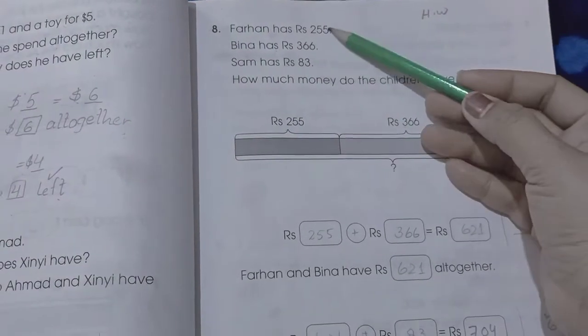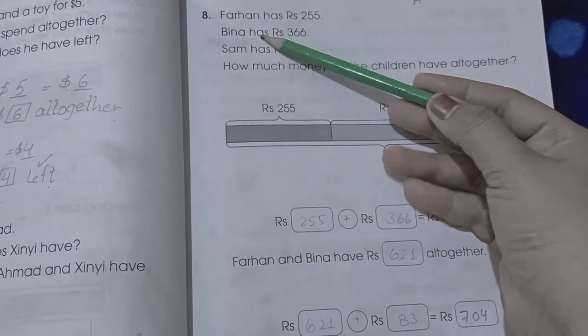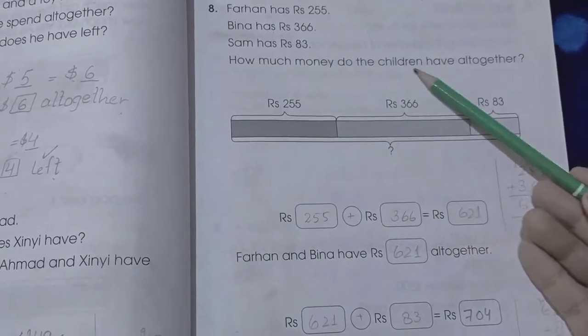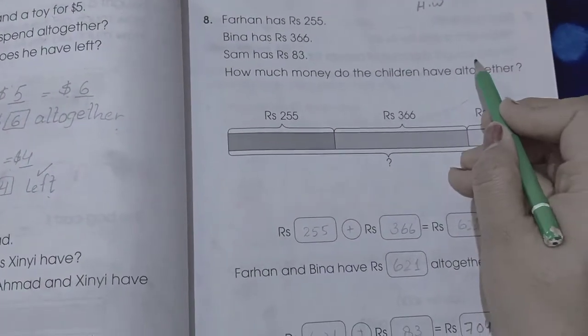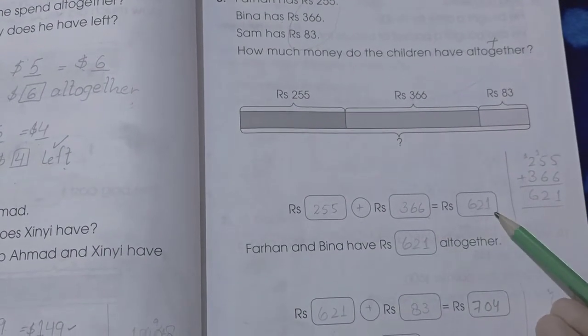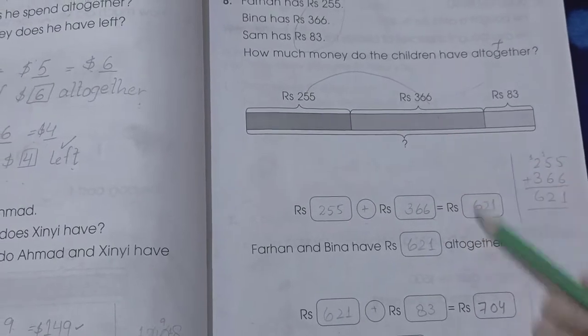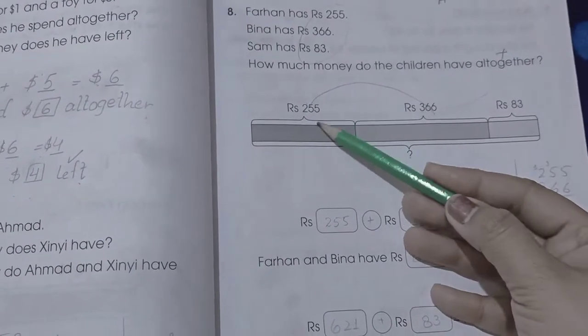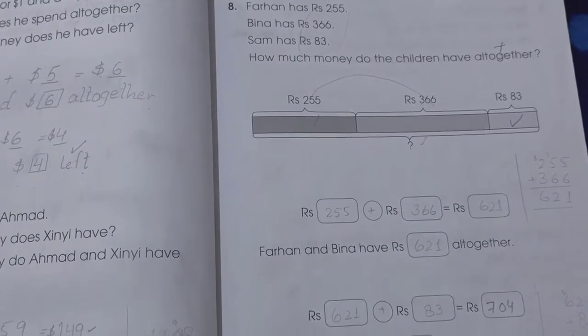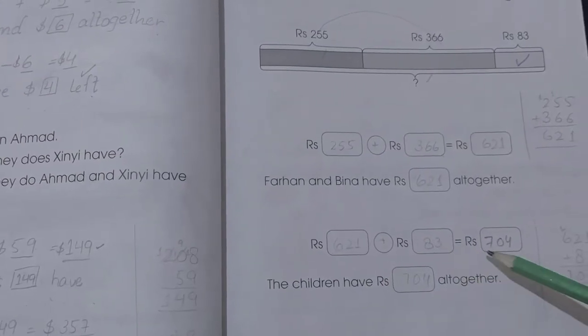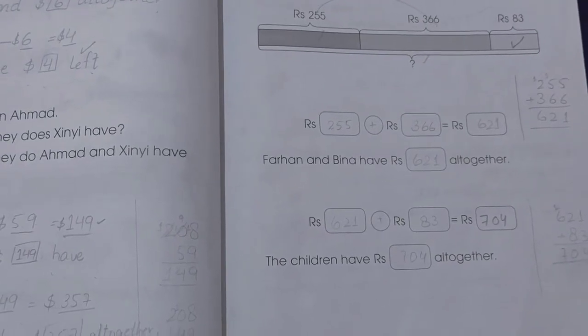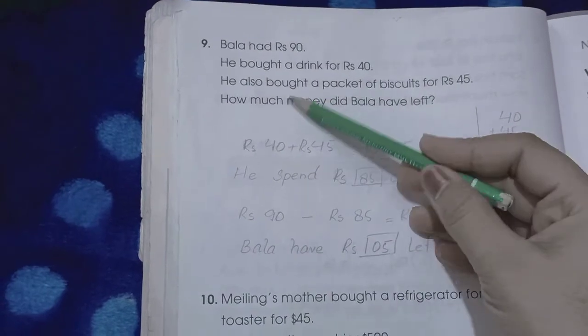Page number 37. Farhan has 255 rupees, Bina has 366 rupees, Sam has 83 rupees. How much money do the children have altogether? We have to add all the rupees. 255 plus 366 is 621. It means Farhan and Bina have 621 rupees. Now we add Sam's amount: 621 plus 83 is 704. The children have 704 rupees altogether.